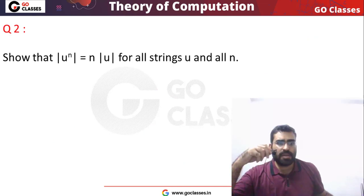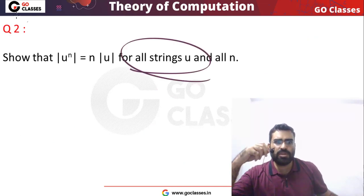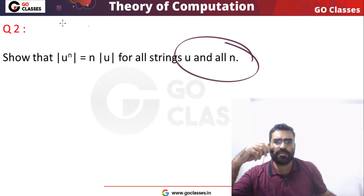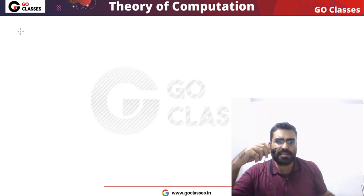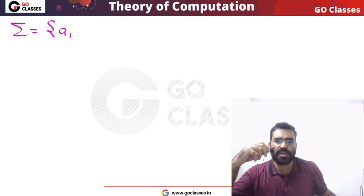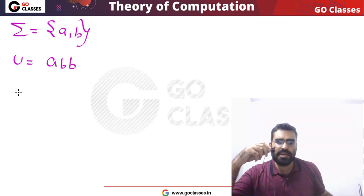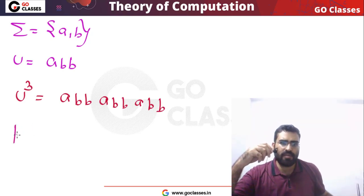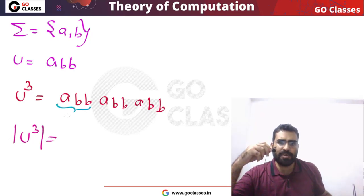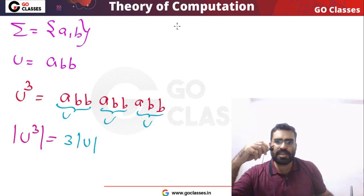Question number 2: Show that if U is any string and N is any non-negative number, then the cardinality (length) of U power N is equal to N times the cardinality of U. This question is very simple. Let me take an example. Assume the alphabet is {A, B} and consider the string ABB. Then U power 3 will be ABB·ABB·ABB. The length of U power 3 is 9, which is 3 times the length of U (which is 3).